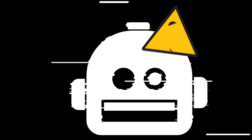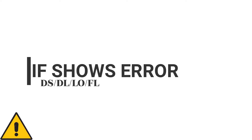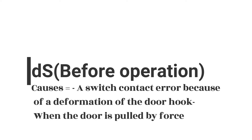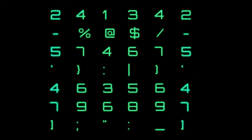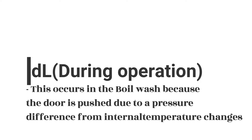Here are some common door lock errors. If it shows error DS before operation, the cause is a switch contact error due to deformation of the door hook when the door is pulled by force. This means someone has yanked on the door — the door has gotten weak over time and the door lock would probably need to be replaced.